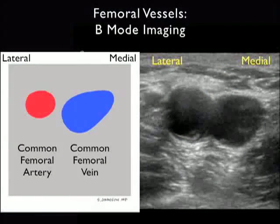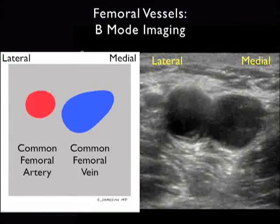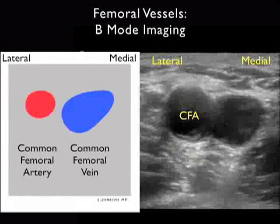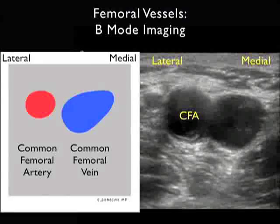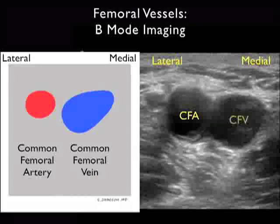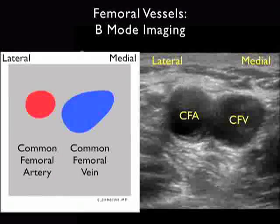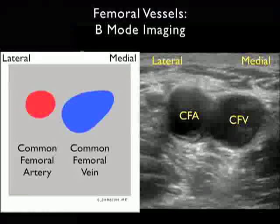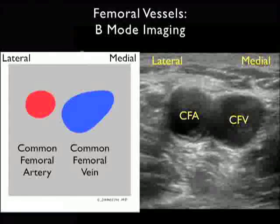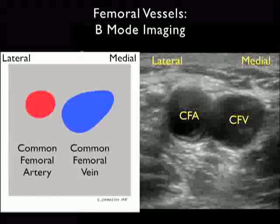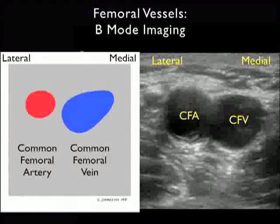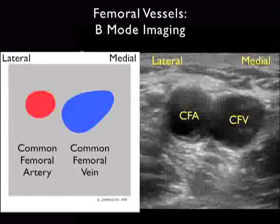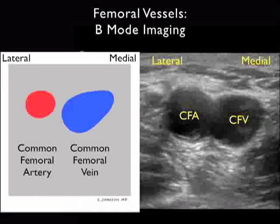While color flow Doppler is very helpful to differentiate the common femoral artery from the common femoral vein, we can also discern the two using grayscale or B-mode sonography. We note the common femoral artery lateral to the common femoral vein as seen medially. Notice that the common femoral artery has more hypertrophic walls and also pulsatile flow within it, differentiating it from the common femoral vein.